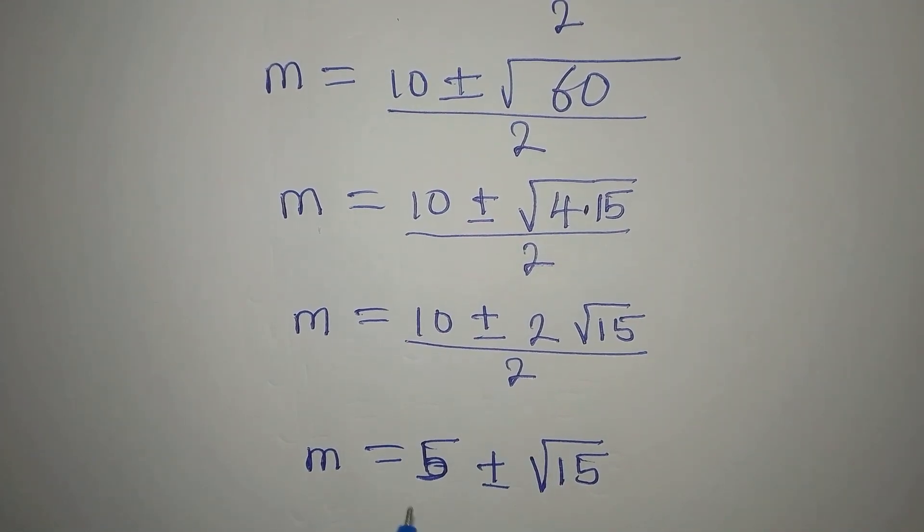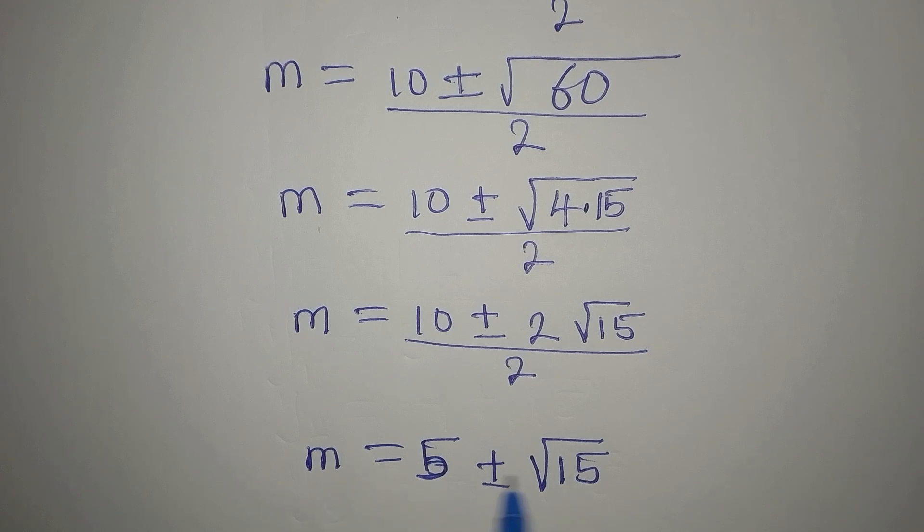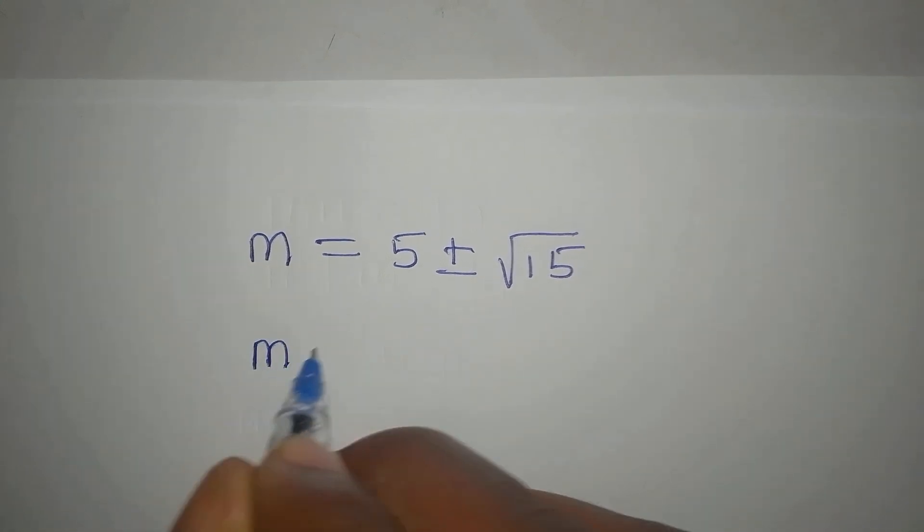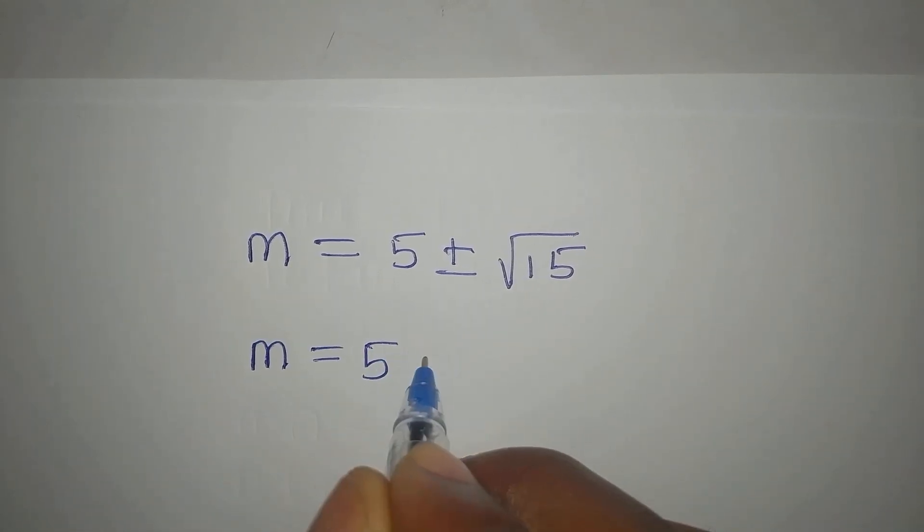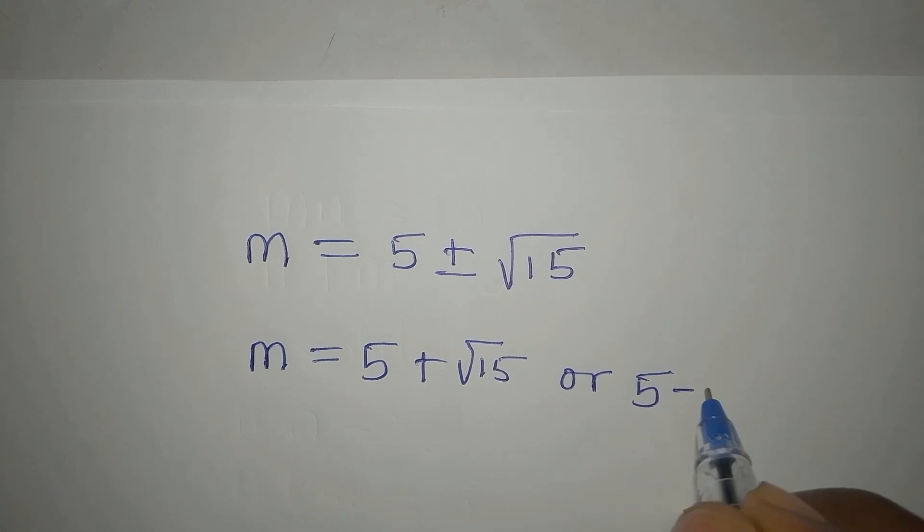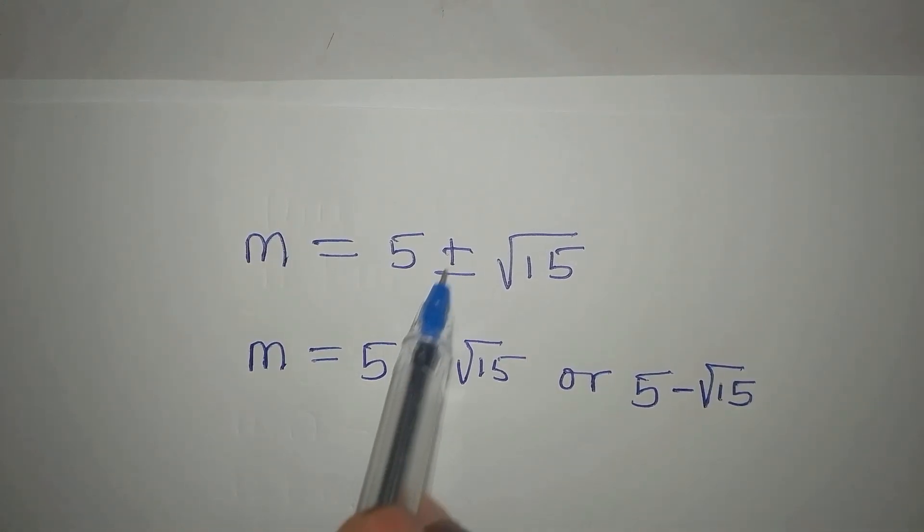2 into 10 is 5. 2 into 2 is 1. And there is an invisible one here. So this is a 2 in 1 value of m. So our m is 5 plus square root of 15 or 5 minus square root of 15 because of this plus or minus.